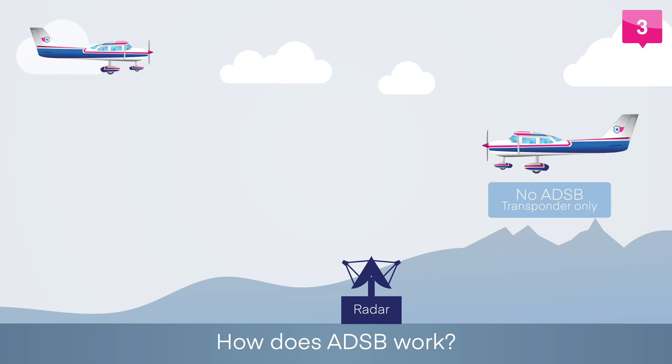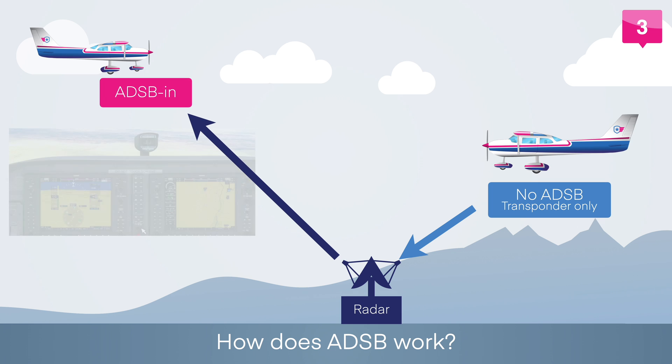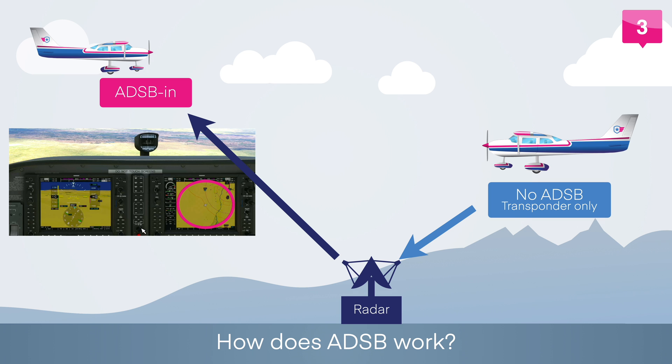Another way this works: an ADS-B out signal can be sent to a ground receiver, which then broadcasts it to everybody else in the area. A control tower can also get that information and display it on their radar. Some aircraft don't have ADS-B but have what's called a transponder — ADS-B and transponders are two different things; ADS-B is an addition to the transponder. Most aircraft have a transponder, which sends a four-digit code containing altitude, direction, and speed so that ground radar can pick it up. That transponder information can also be converted into an ADS-B signal sent to an ADS-B receiver.